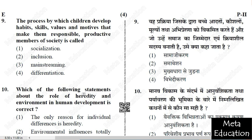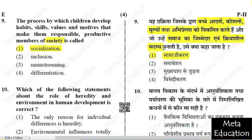Question 9: The process by which children develop habits, skills, values and motives that make them responsible, productive members of society is called — 1) Socialization; 2) Inclusion; 3) Mainstreaming; 4) Differentiation. When we talk about something society-related — habits, skills, values, motives — that process is called socialization. The correct answer is option 1.